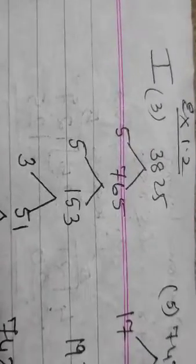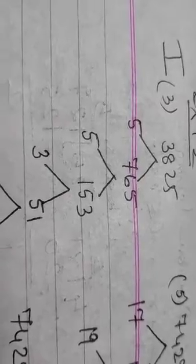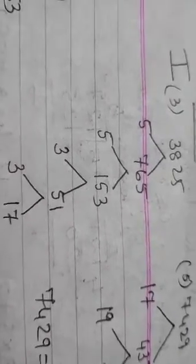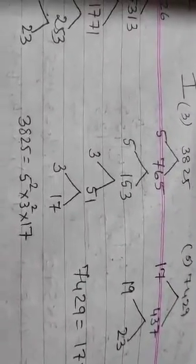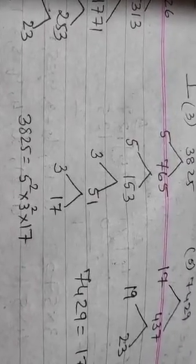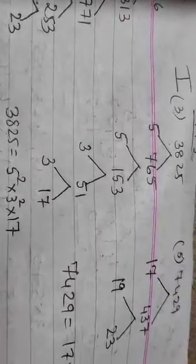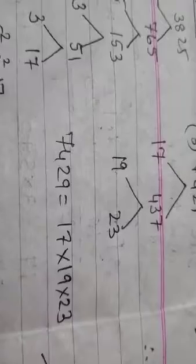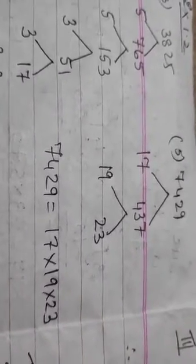3825 will be 5×765 times, then 765 is 5×153 times, 153 is 3×51 times, and 51 is 3×17 times. So the factors will be: there are two 5s, two 3s, and one 17. So you write it as 5²×3²×17 — these are the factors of 3825. Similarly 7429 will be 17×437 times, and 437 is 19×23 times. All three are prime numbers. This is how you factorize into prime factors.